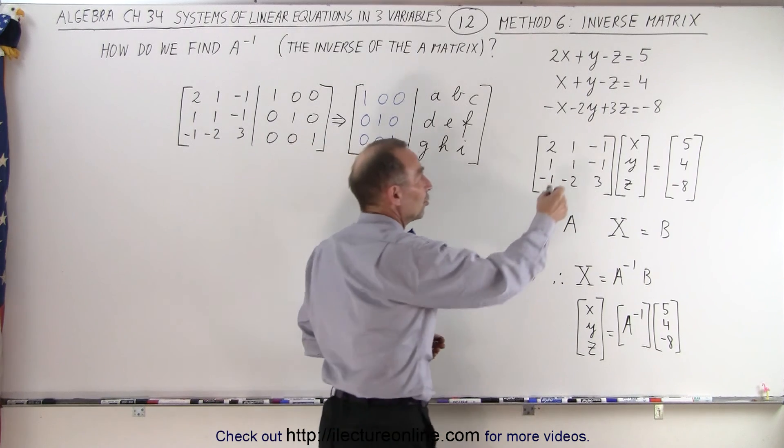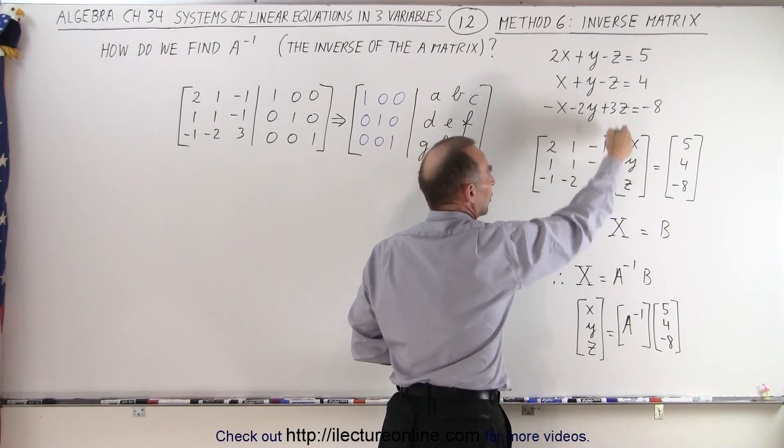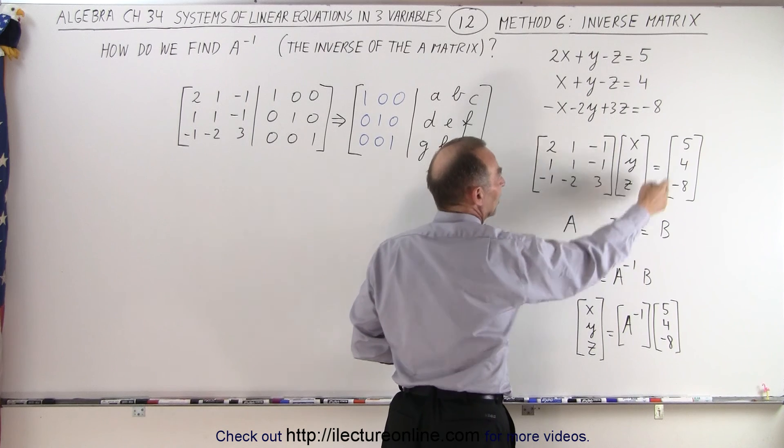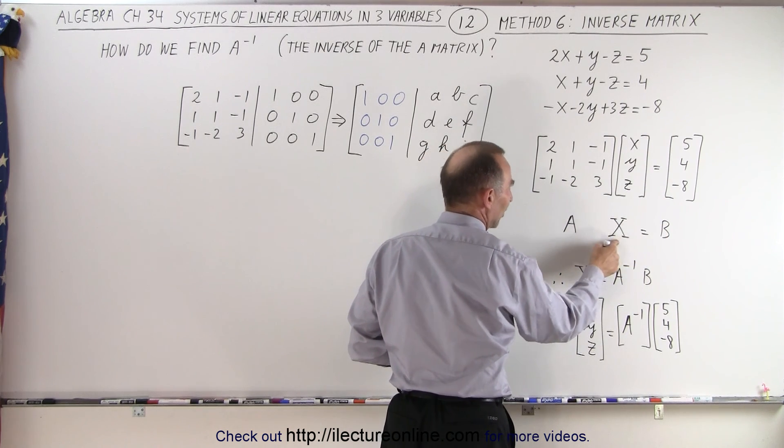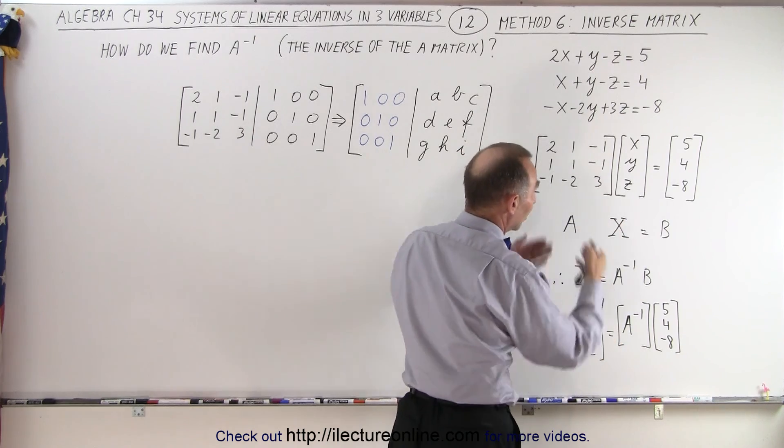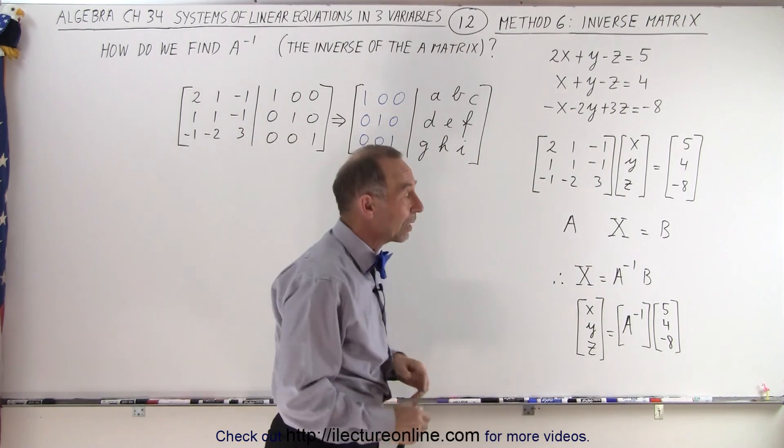This is what we call the A matrix. This is what we call the variable matrix. And this is what we call the B matrix. So the A matrix multiplied times the variable matrix equals the B matrix, a different way of writing the very same thing.